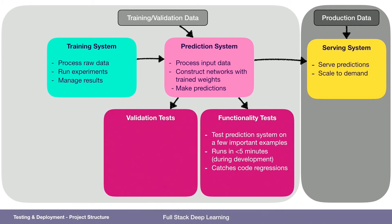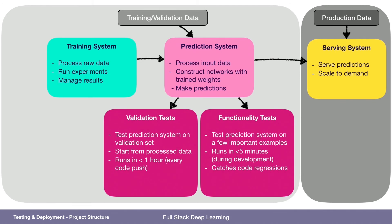On the other hand, validation tests can test the prediction on a larger validation set — not just a few examples, but maybe millions of examples. Here we start from processed data, whereas in functionality tests we want to start from the form of the data the system will actually see in production. So for an image model, we'd start with actual images in functionality tests, but in validation tests we might start with a data frame that already has the images pre-loaded. This should run in hopefully less than an hour, and the goal is to run it every time we push code to make sure we didn't regress model performance.